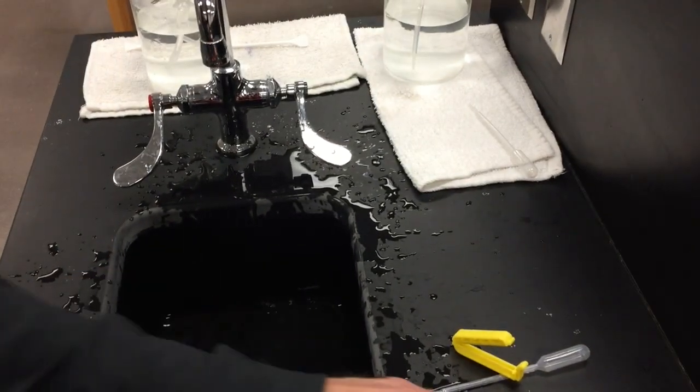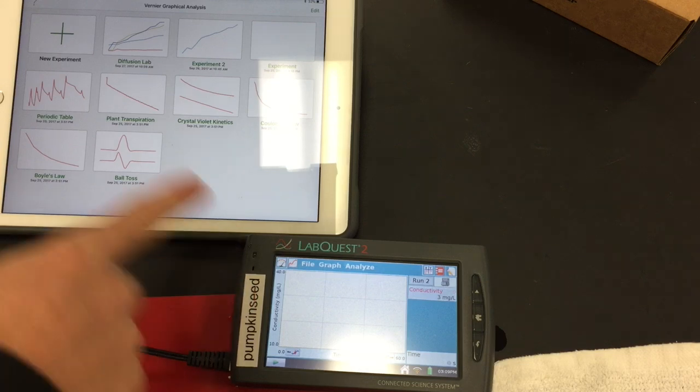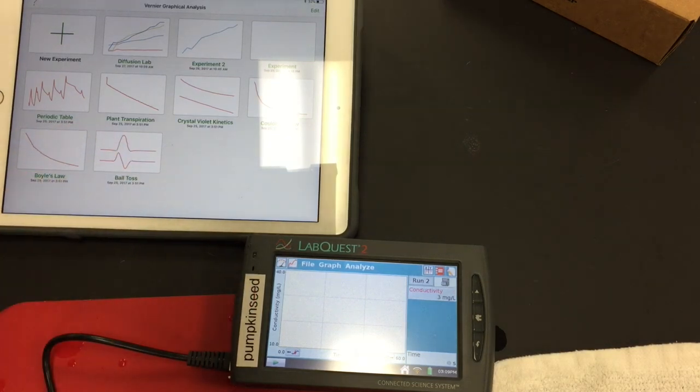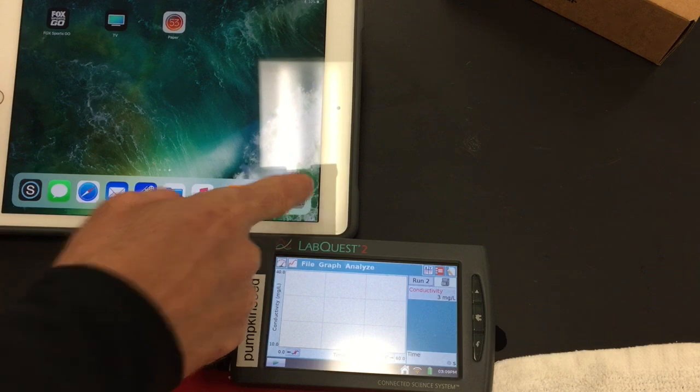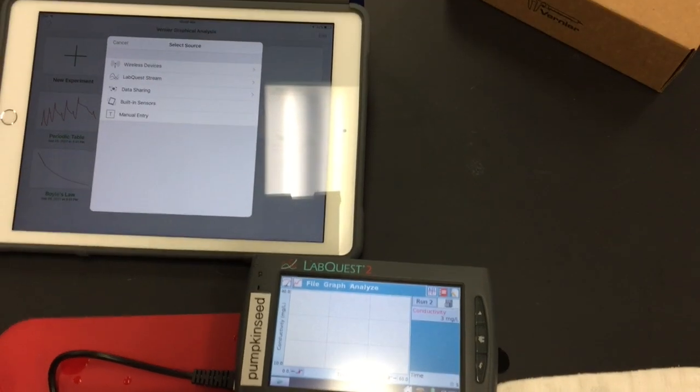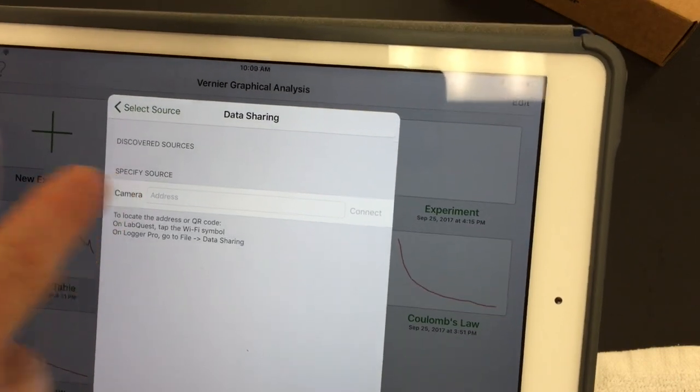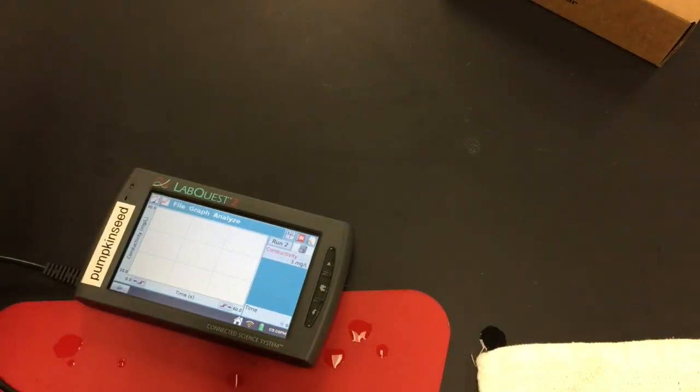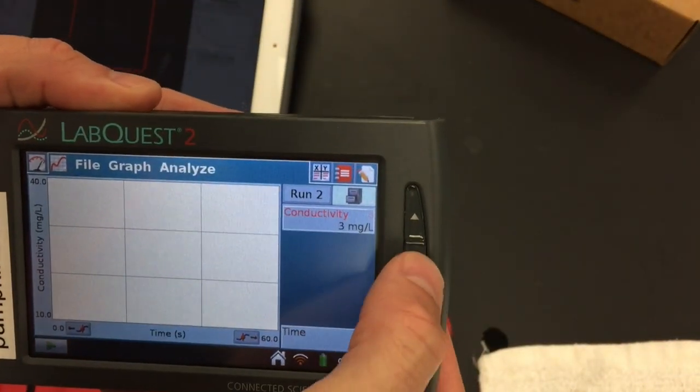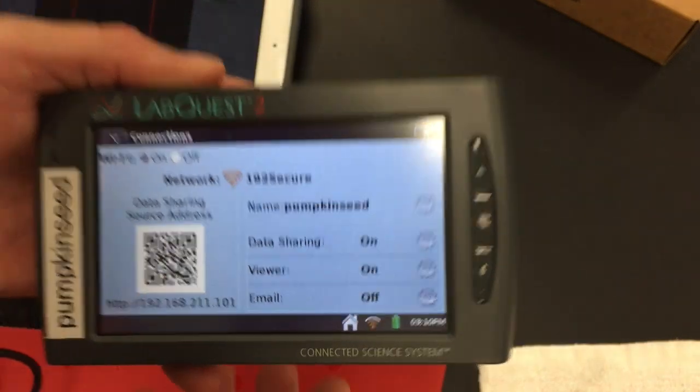The last thing I'm going to show is how to get the data from the Lab Quest device to your iPad. You'll need to have the Graphical Analysis app that we posted on Schoology. Open that up and click new experiment. From there you're going to click data sharing and select the camera. On your Lab Quest you'll need to bring up the code to scan, so hit the home button, go to connections, and scan that code. Then select connect.